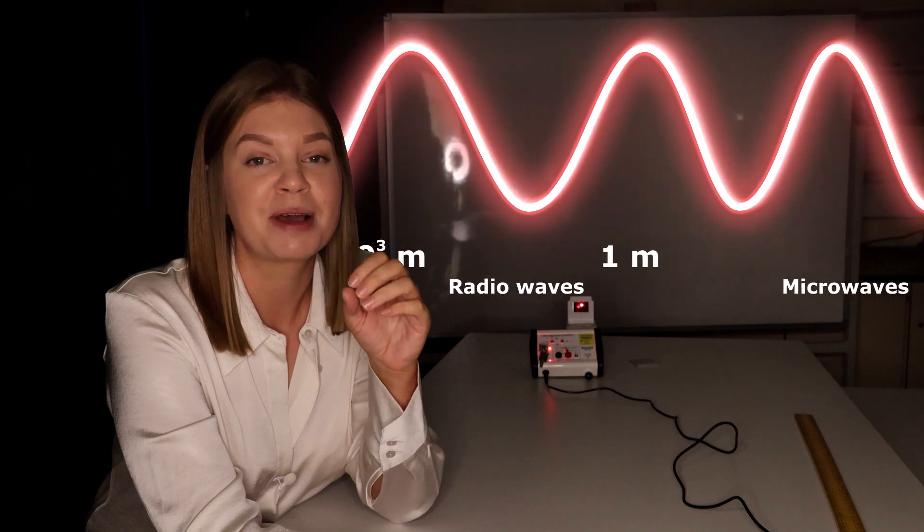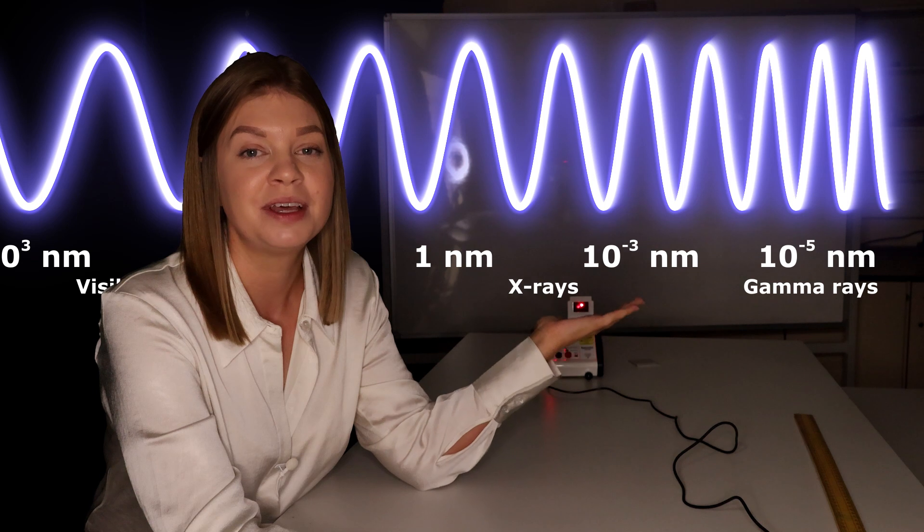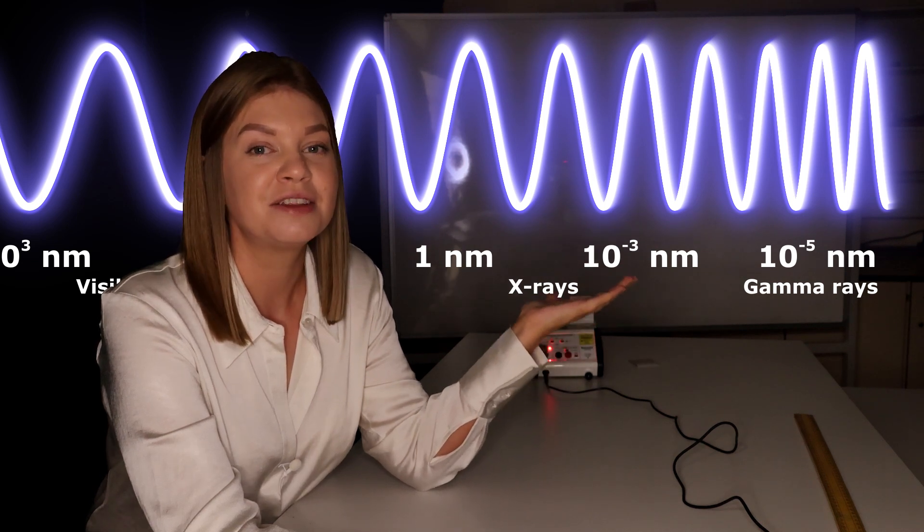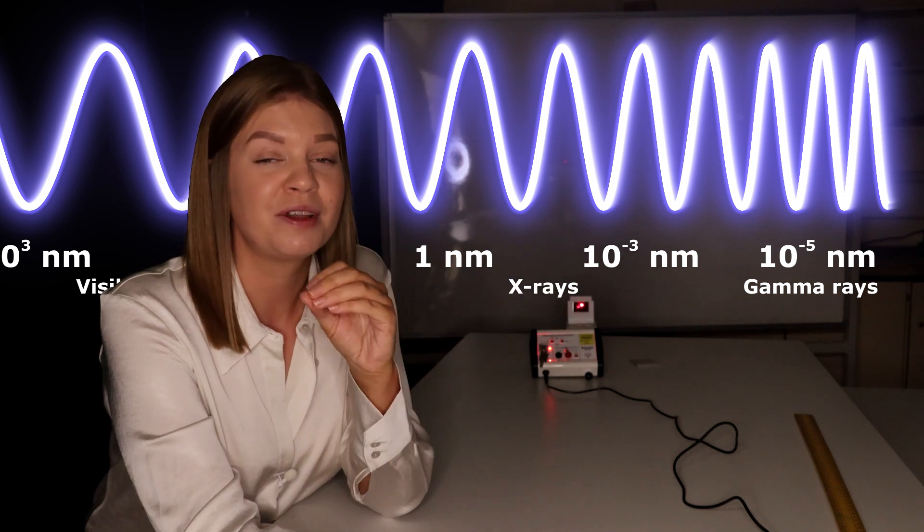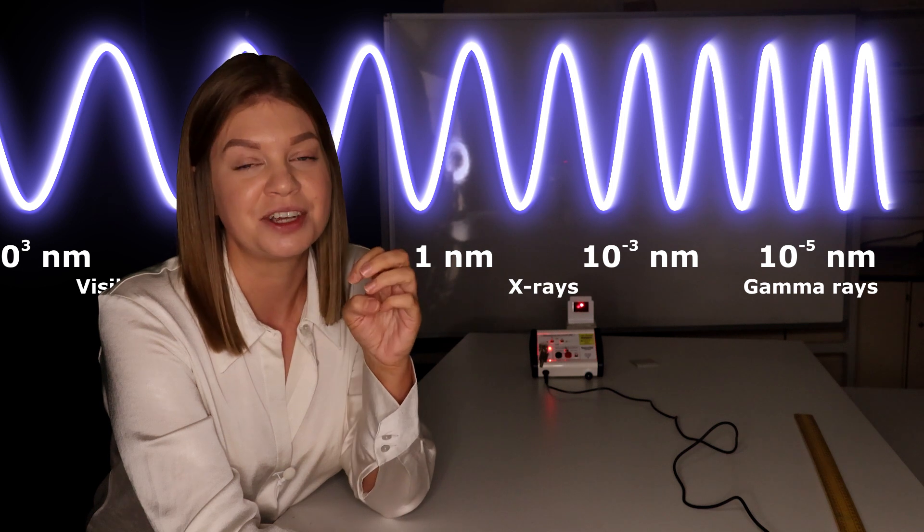Now the energy of a light source determines how photons can interact with matter. As an example, as we move towards the higher energies of the electromagnetic spectrum, we get towards the ionizing radiation region. Now in this region, the photons are capable of stripping off electrons from the atoms that it interacts with, and it can be very dangerous to living tissue.